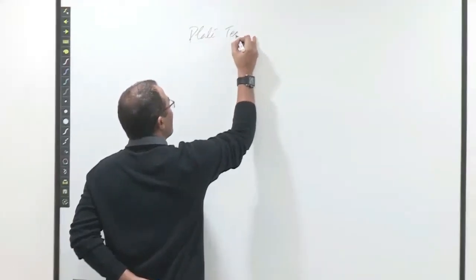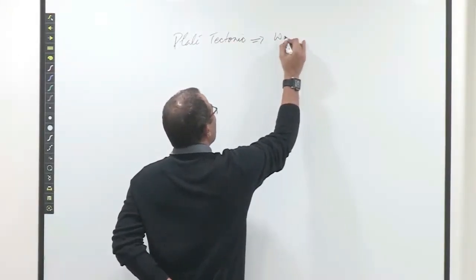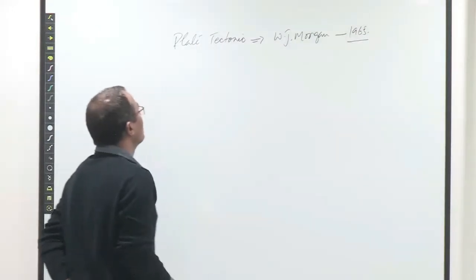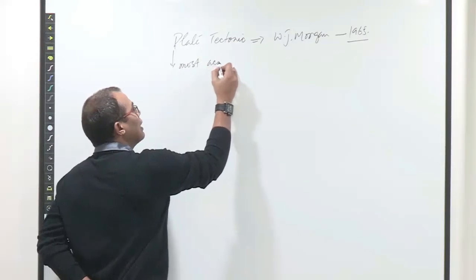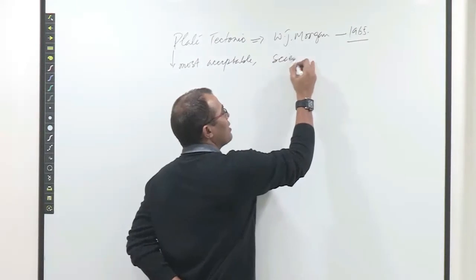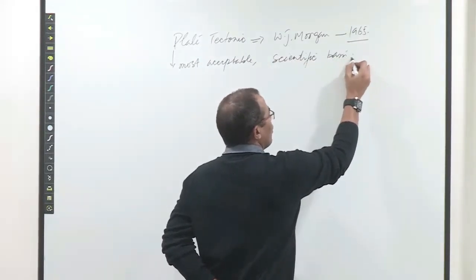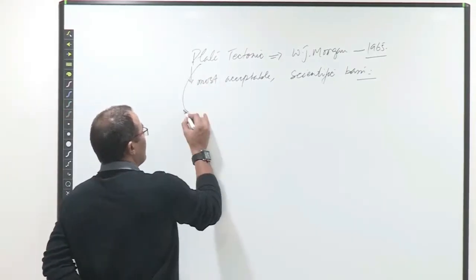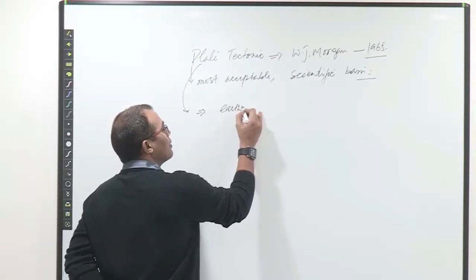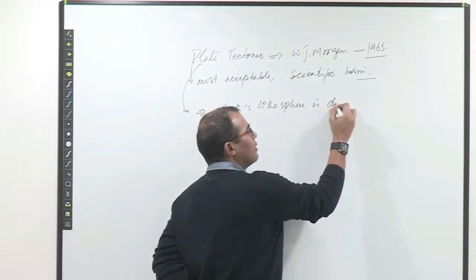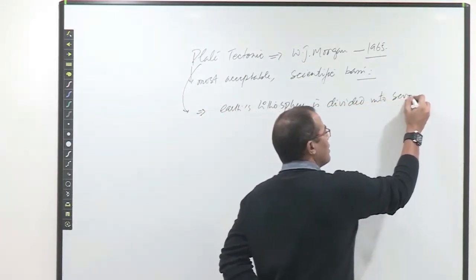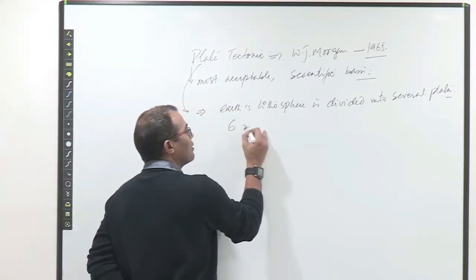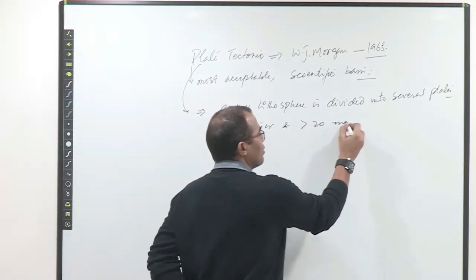Plate tectonic theory came in 1965. The name generally given is W.J. Morgan, 1965. It is the most acceptable theory as it has a scientific basis and explanation for almost all the features on the surface of the earth. It suggests that the earth's lithosphere is divided into several plates, identifying six major and more than twenty minor plates.